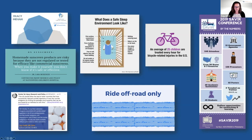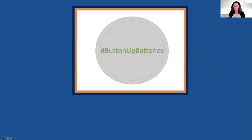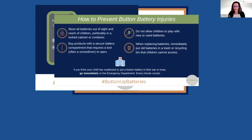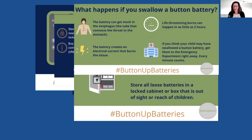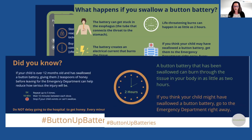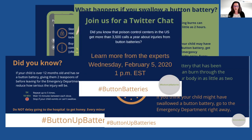These are examples we created for a Twitter chat about button batteries and how dangerous they can be. We created a hashtag — written as 'Button' capital B, 'Up' capital U, 'Batteries' — not all in capitals. Part of the reason is accessibility: it makes it easier for people with visual challenges or where English is not their first language to understand it when the words are visually separate. We also made it an action — 'button up your batteries' — because we wanted you to do something.